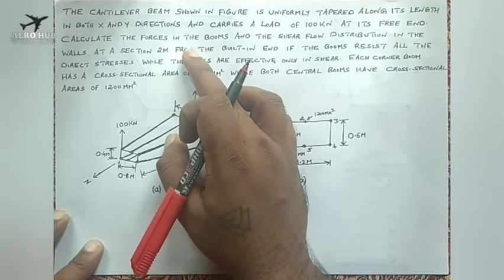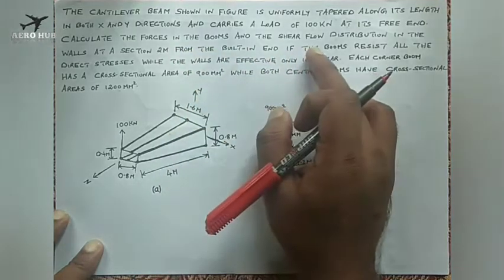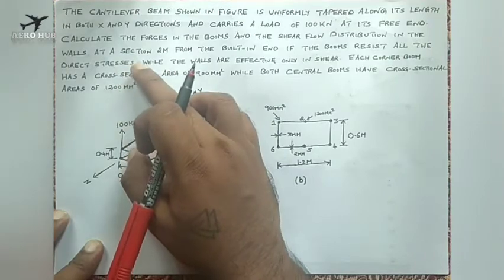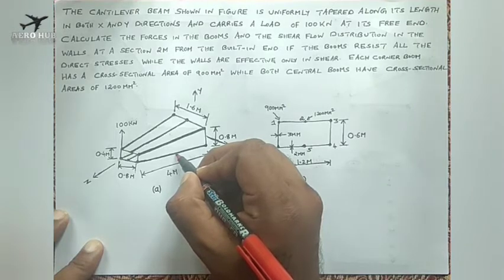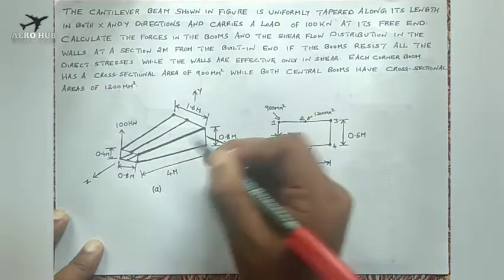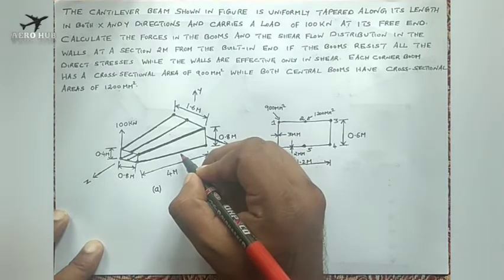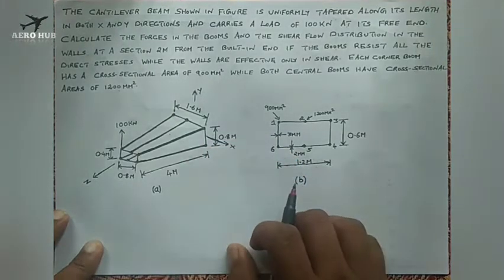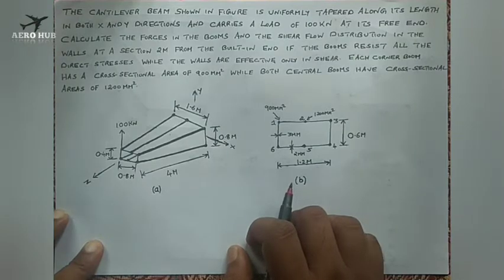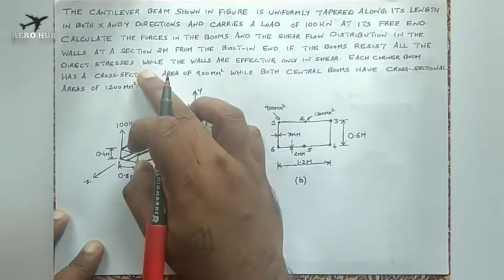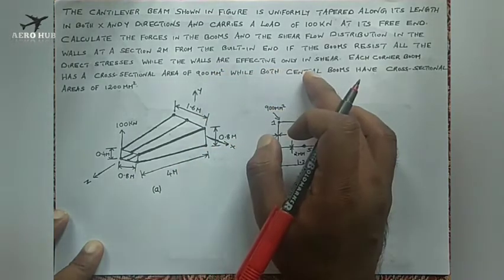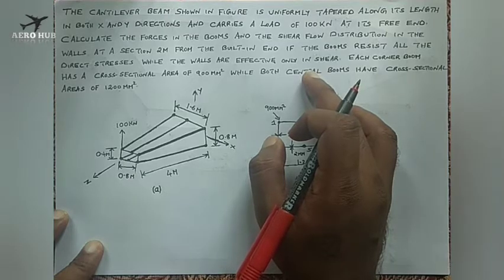Calculate the forces in the boom — we are asked to calculate the axial load in the boom and the shear flow distribution in the walls at a section 2 meters from the end, that is exactly at the center of the beam. The booms resist all direct stress while the walls are effective only in shear — the skin is ineffective in bending.